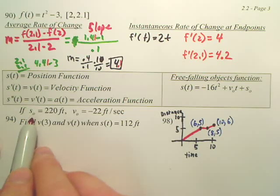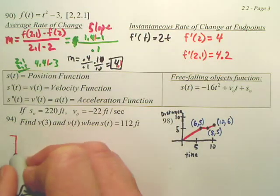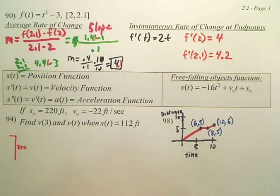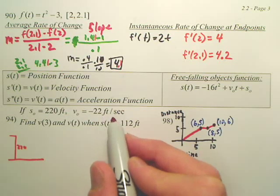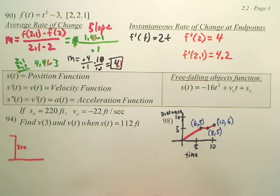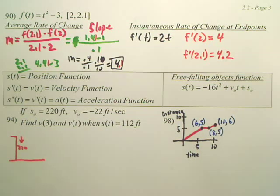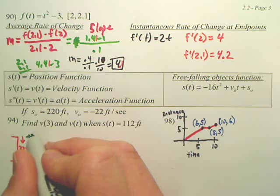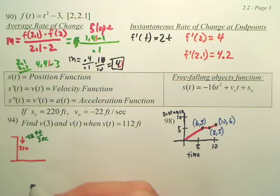Looking at this problem, I'm given that s zero is 220 feet. Meaning, if you drew a picture, this is 220 feet. Are you okay with that? You're on a cliff 220 feet above the air, above ground level. You have a velocity of negative 22 feet per second. Negative is downhill, positive is uphill. Kind of like a number line. So basically, what this person did is they threw it down at a velocity of negative 22 feet per second. So this person, standing 220 feet up, threw it down at 22 feet per second.